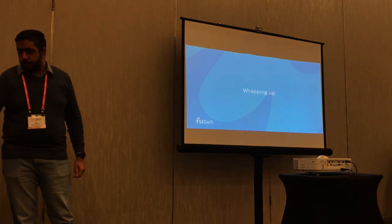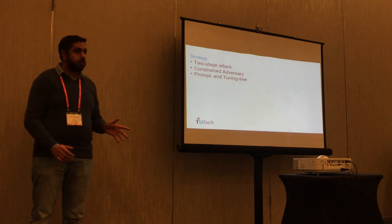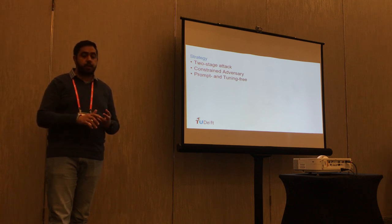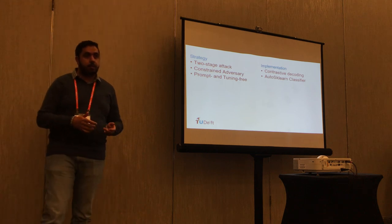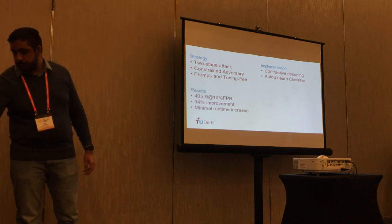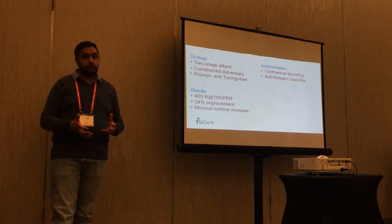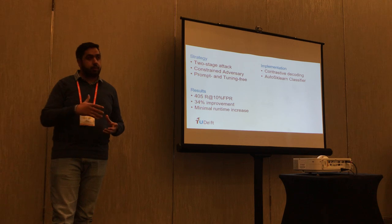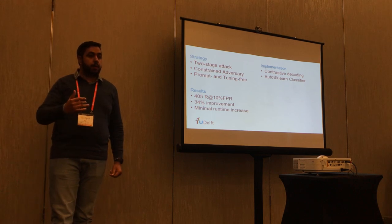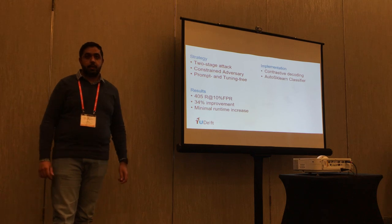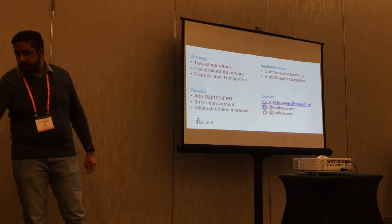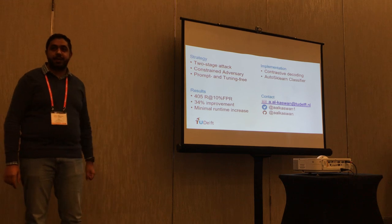To wrap up: we showed a two-stage attack strategy with a constrained adversary — our attack is both prompt and fine-tuning free. We implemented this using contrastive decoding and an AutoSklearn classifier. This approach achieves a score of 0.413 at 10% false positive rate — 34% higher than the baseline — with minimal additional computation. The classifier addition does not really add extra computational cost.